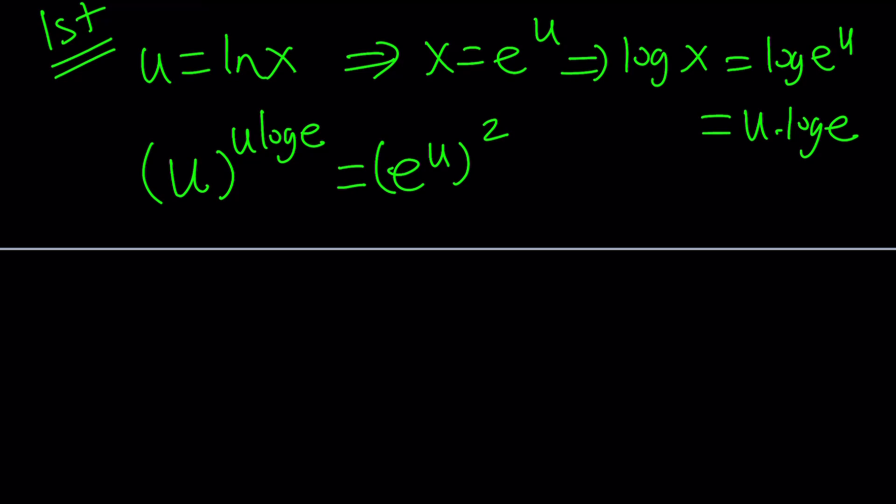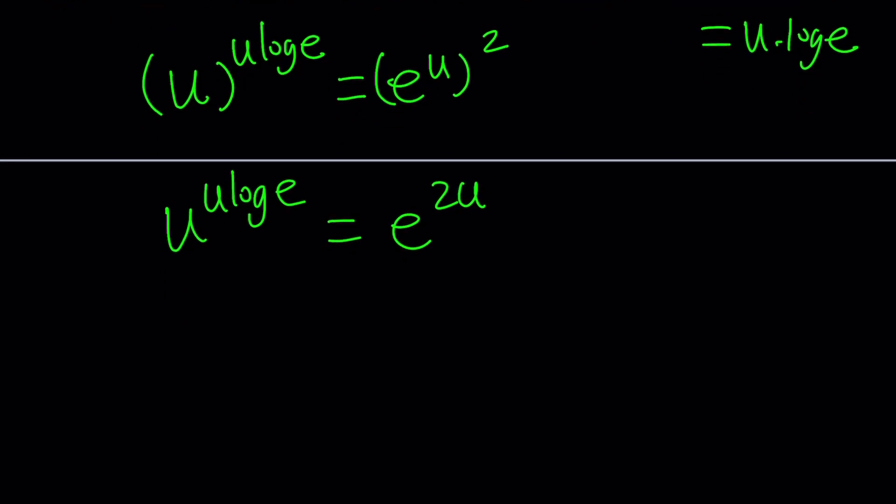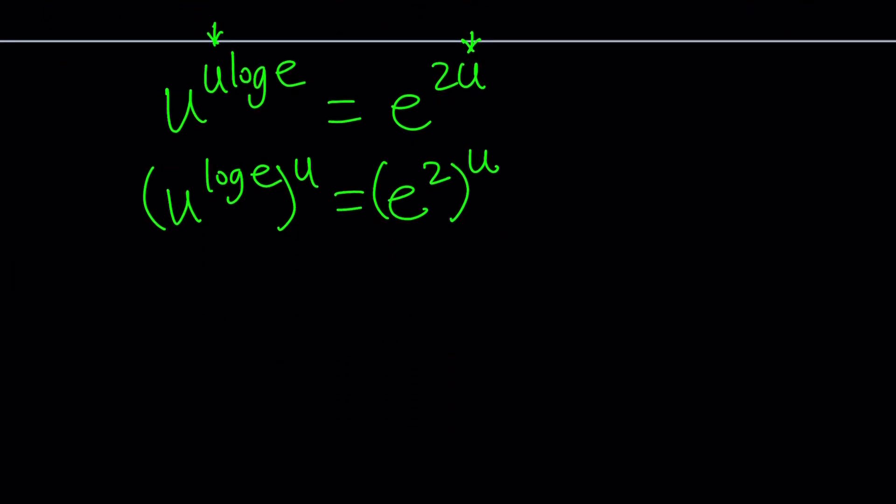And then we can go ahead and write this as e to the power 2u. And if it's your birthday, happy birthday to you. All right, so we can kind of write it that way. And now one thing that should get your attention is the presence of u on both sides in the exponent, of course. So I can probably do the following. Let's just write this as u to the power log e and then raise it to the power u. And this can be written as e squared to the power u. Notice that we could also switch these around. Right? Now, what does that mean?